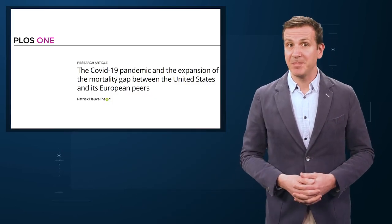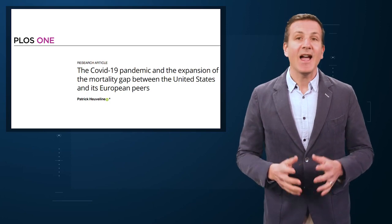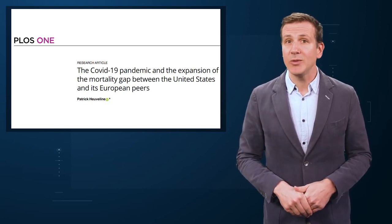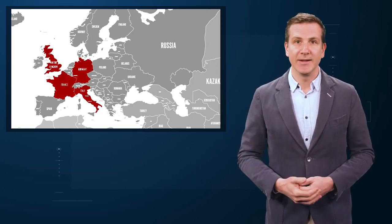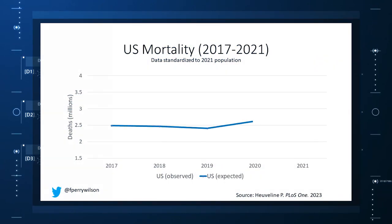The best way to get around that is to use data from other countries. And that's just what this article — a rare single-author piece by Patrick Heuveline does — calculating excess deaths in the U.S. by standardizing our mortality rates to the five largest Western European countries: the U.K., France, Germany, Italy, and Spain. Controlling for the differences in the demographics of that European population, here is the expected number of deaths in the U.S. over the past five years.